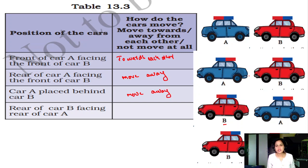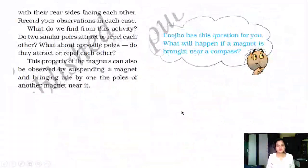The rear of car B. This is the rear end of car B facing the rear of car A, like this. If you place the cars, then these two are opposite poles attract. They move towards each other. With their rear sides facing each other.